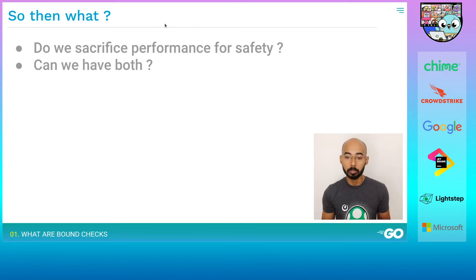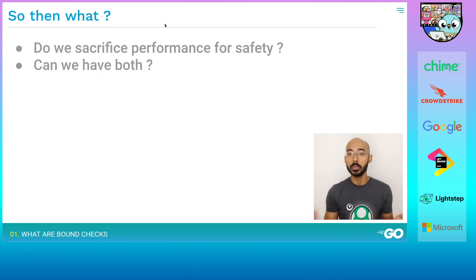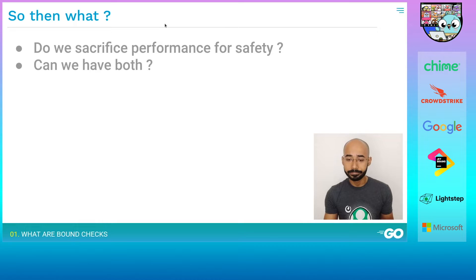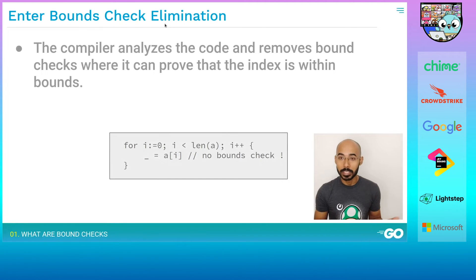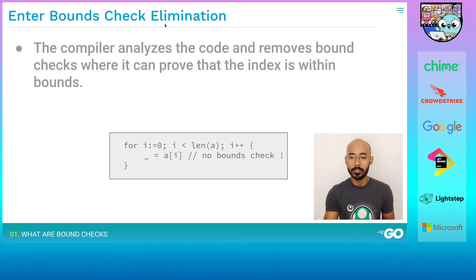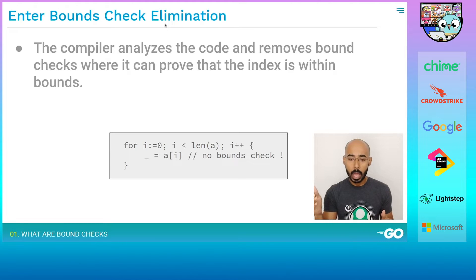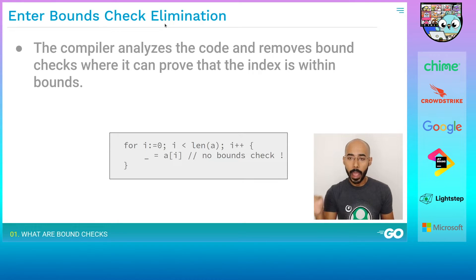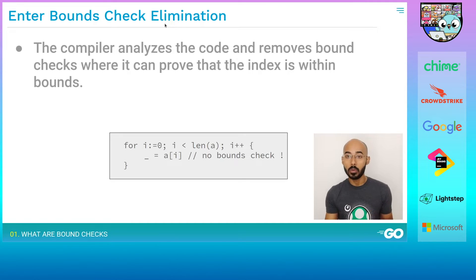Your program can not just crash, but hackers could take advantage of those vulnerabilities and bad things can happen. So what do we do? If we don't have bounds checks our programs can crash disastrously, but if we do have them we lose out on performance. Is it possible to have our cake and eat it too? Of course — that's what this talk is about. The trick is to let the compiler do the heavy lifting. The compiler analyzes the code and knows that since the loop goes from 0 to len(a) minus 1, at no point can i be out of bounds — so there's actually no bounds check in that case.